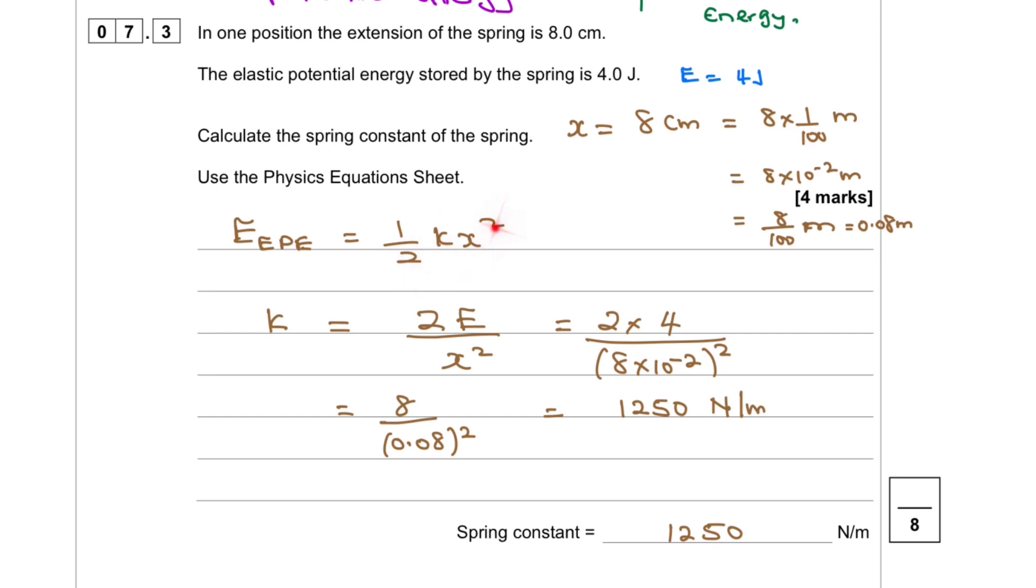The elastic potential energy is E_EPE equals a half k x squared, where x is the extension which is 8 centimeters. Rearranging: k equals 2E over x squared. We plug in the values and get k to be 1250 N/m.